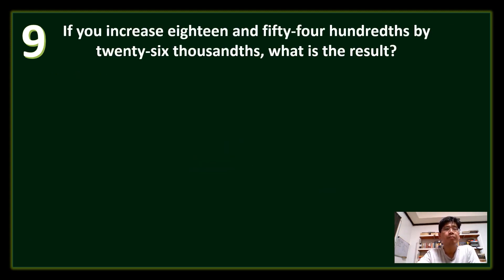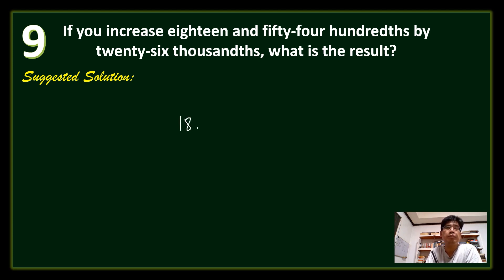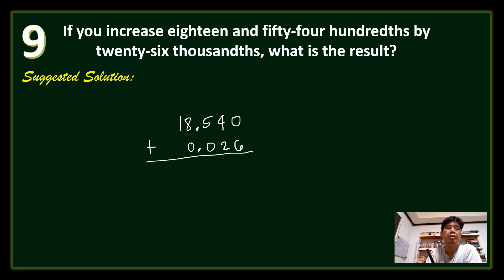Question number 9: If you increase 18 and 54 hundredths by 26 thousandths, what is the result? Writing in symbols: 18 and 54 hundredths is 18.54, and to increase by 26 thousandths means adding 0.026. Aligning the decimal points and annexing a zero after the 4, we add: 6, then 4 plus 2 is 6, and 18 plus 0 is 18. The answer is 18.566.